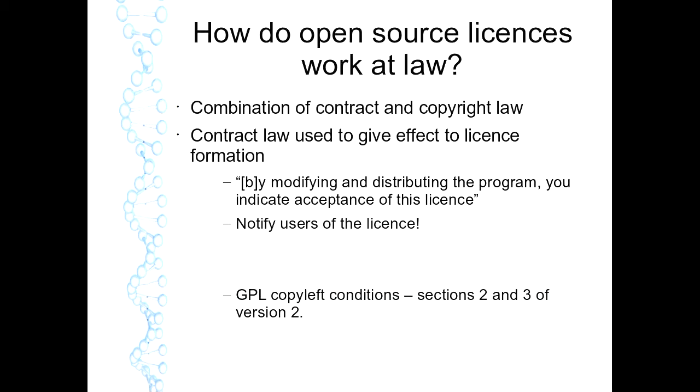Interestingly, Bradley's talk yesterday mentioned an issue raised by commercial counsel suggesting you bury the license deeply within the source code so that no one can see it. That is a bad idea. If you want to give effect to the open source license, you should have it as clearly marked as possible in a file such as license.txt to indicate the conditions on how the software can be used. Notify potential users of the license — put it up front. You can obviously do that within GitHub.